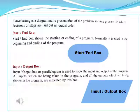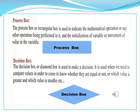Process box: The process box or rectangular box is used to indicate the mathematical operation or any other operation being performed in it, and the initialization of variables or movement of values in the variable. The process box contains processing steps, which are normally called activities, shown via a rectangular box. Rectangle is the most common shape in any flowchart, used for any action, operation, or task being performed.